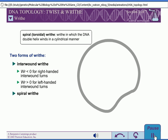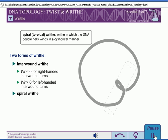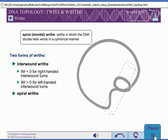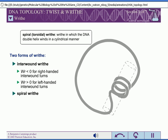The other form of writhe is spiral or toroidal writhe. In spiral writhe, the DNA winds as if around a cylinder. Spiral writhe often occurs when DNA molecules wrap around proteins.